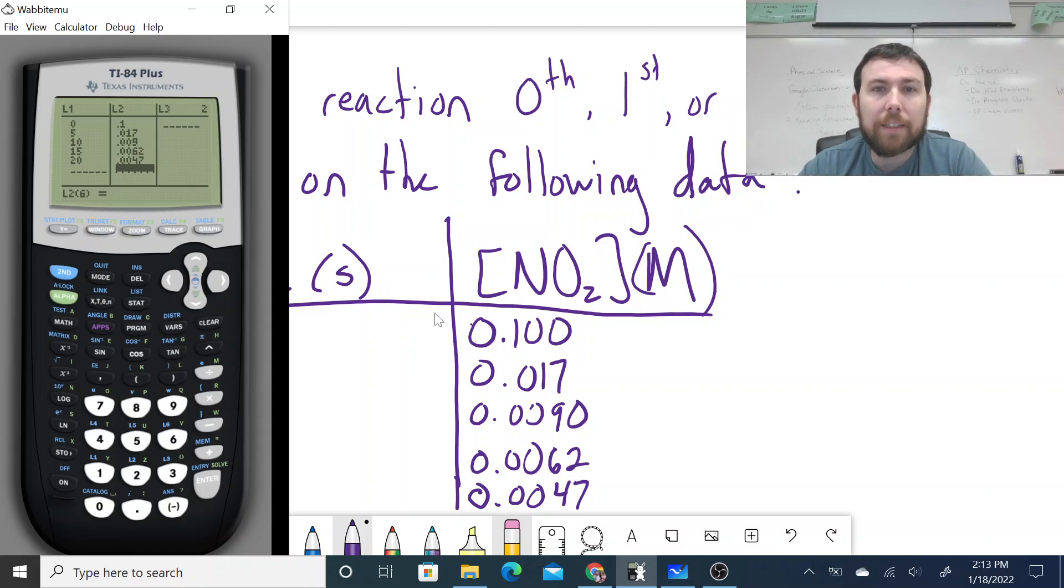Now, like I said, initially, because I've been given my concentration information, this would be for measuring zeroth order. Now it asks us, is it zeroth first or second? Now to go ahead and save myself some time, I'm going to go ahead and for list three and list four, L3 and L4, I'm going to go ahead and set it up so that I can have it in first and second order, graphically speaking, set up. So remember for zeroth order, it's simply concentration versus time. For first order, it's the natural log of the concentration versus time. And then for second order, it's going to be one over the concentration.